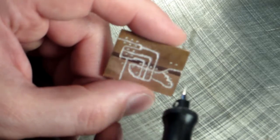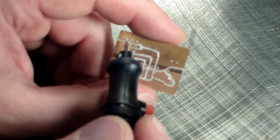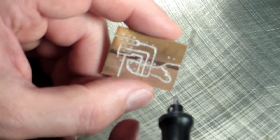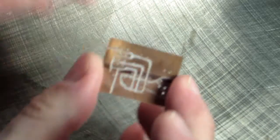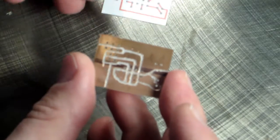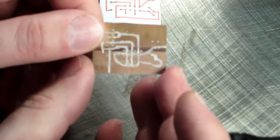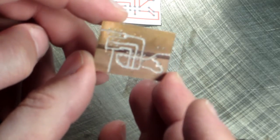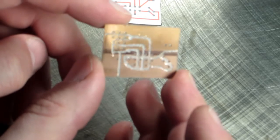I suppose I could have just drawn on with a sharpie where I wanted to cut my paths, looking at a reference, and then ground it off that way a lot easier. So, solder it up and test it out.